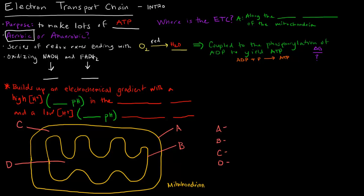More specifically, the purpose of the electron transport chain is to re-oxidize all the NADHs and FADH2s that we've made up until this point, whether it was in glycolysis, the pyruvate dehydrogenase complex, or the TCA cycle. Any NADHs and FADH2s that we made will be re-oxidized back into NAD+ and FAD respectively.